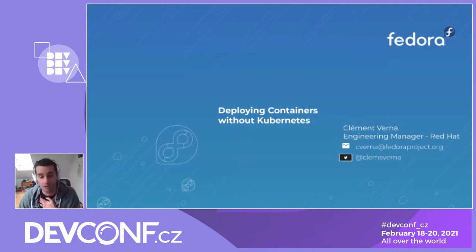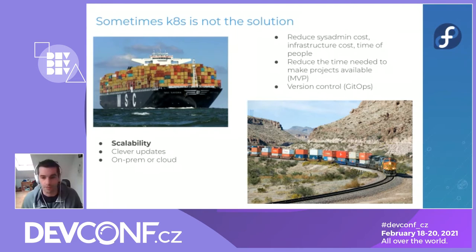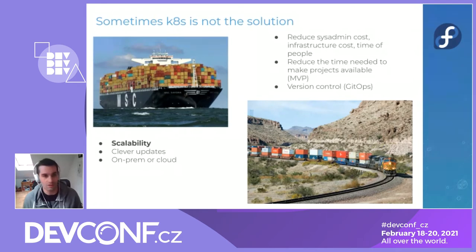We are involved with Fedora CoreOS and also Redhat CoreOS in the OpenShift product. So why would we look at alternatives to Kubernetes when we want to deploy containers? Currently, the main common solution to the problem of running containers in production is to go for Kubernetes.